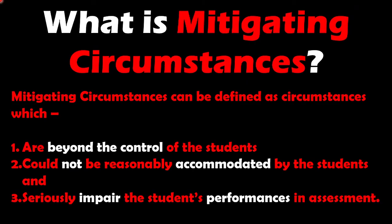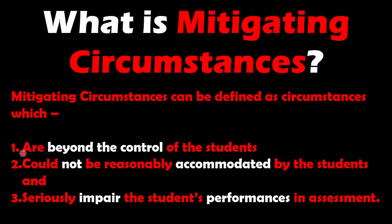First of all, let us see what mitigating circumstances are. Mitigating circumstances can be defined as circumstances which are beyond the control of students, could not be reasonably accommodated by the students, and seriously impair the student's performance in the assessment. If these three conditions are satisfied, we can say a particular circumstance qualifies as mitigating circumstances.